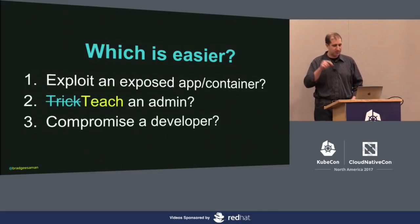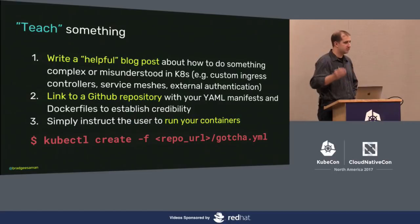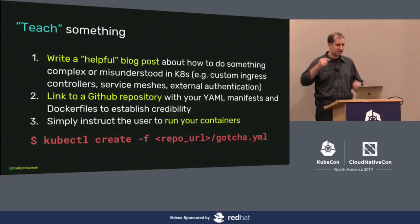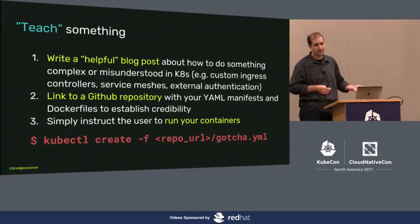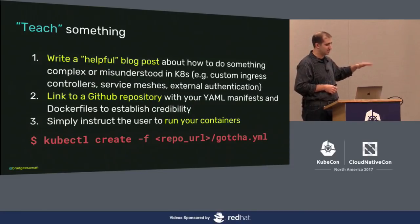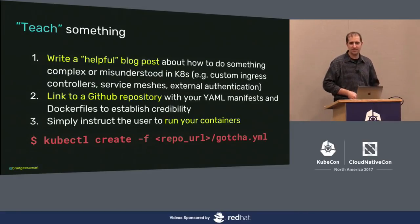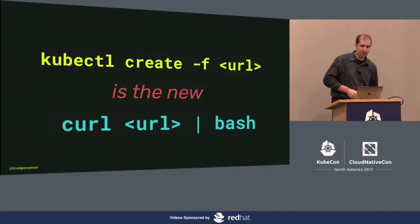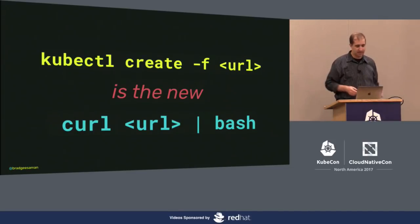I'm going to pick on tricking an admin today. I've written a couple of blog posts but read thousands, and I found a pattern: if you say here's something really complicated, use my custom images, here's my Dockerfile, everything's on the up and up — buried in those instructions is a `kubectl create` from a URL. Just slam all those pods and services in and figure it out. I like to think `kubectl create` from URL is the new `curl | bash`, and it's often worse because now it's distributed across thousands of nodes.